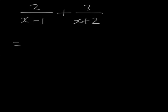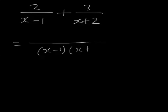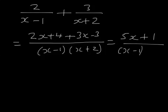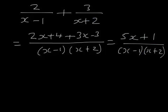You probably remember how you add fractions like this: write it with a common denominator. 2 gets multiplied by x plus 2, and 3 gets multiplied by x minus 1, so we get 5x plus 1 over (x minus 1)(x plus 2). This work is about going the other way — starting with something like this and splitting it into partial fractions. It's particularly useful when we want to integrate expressions like this.